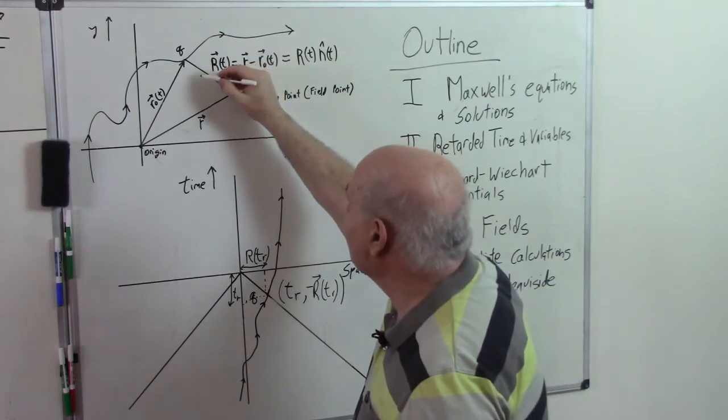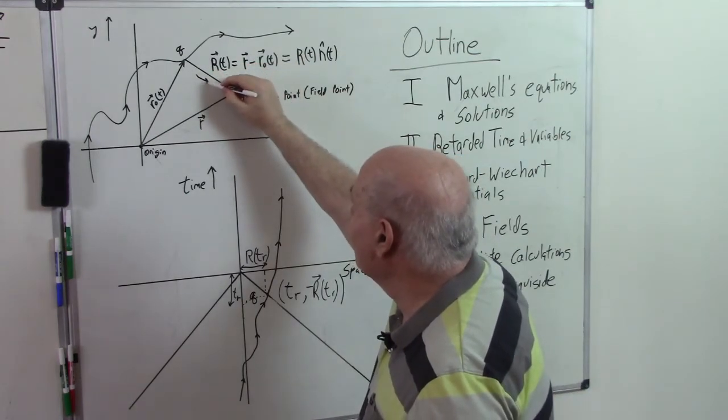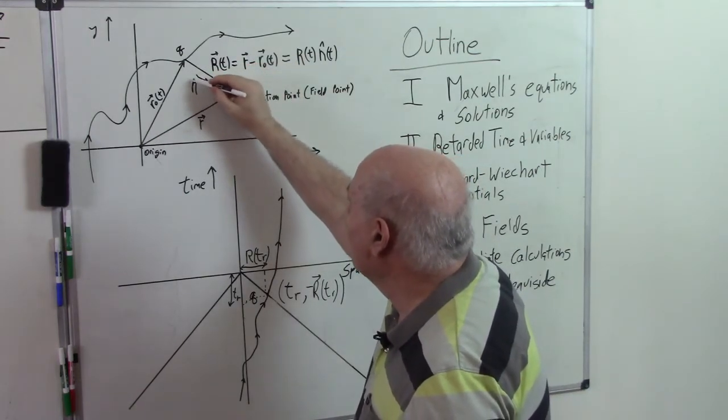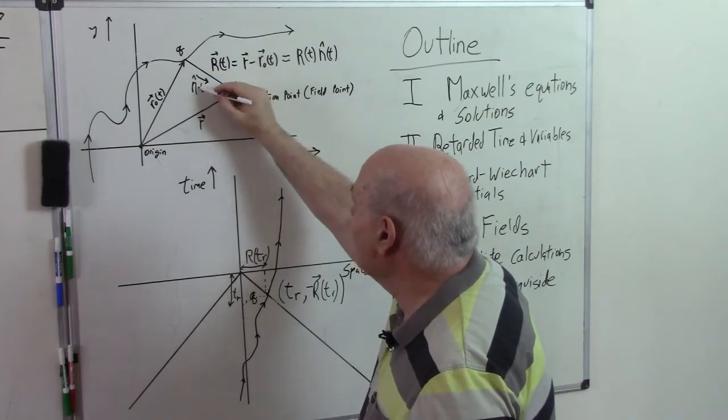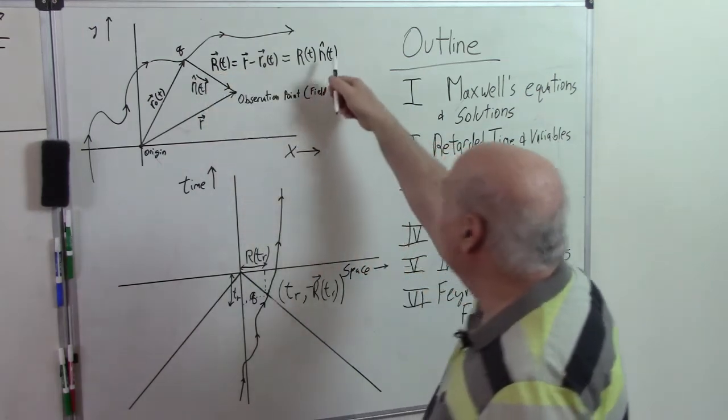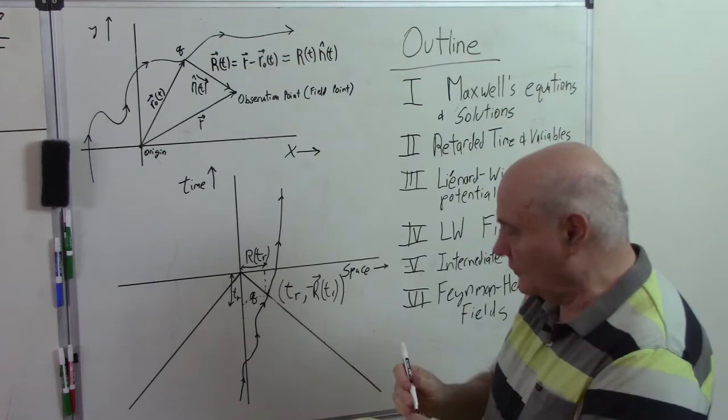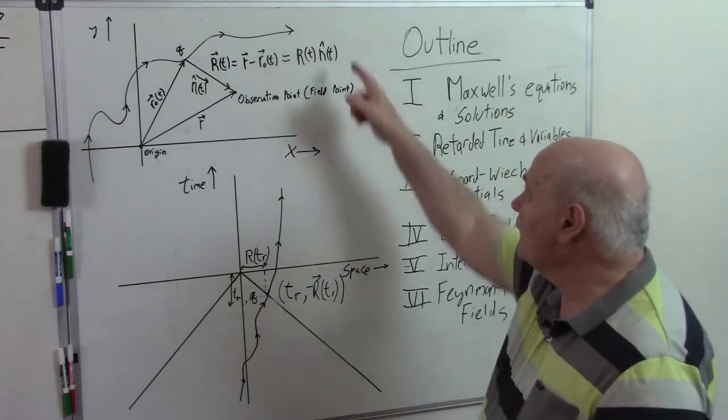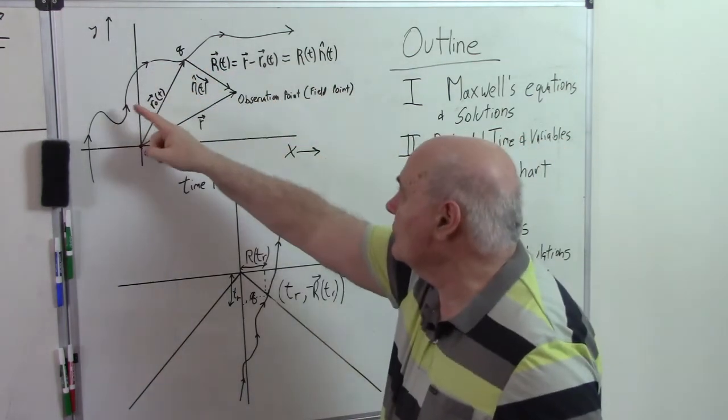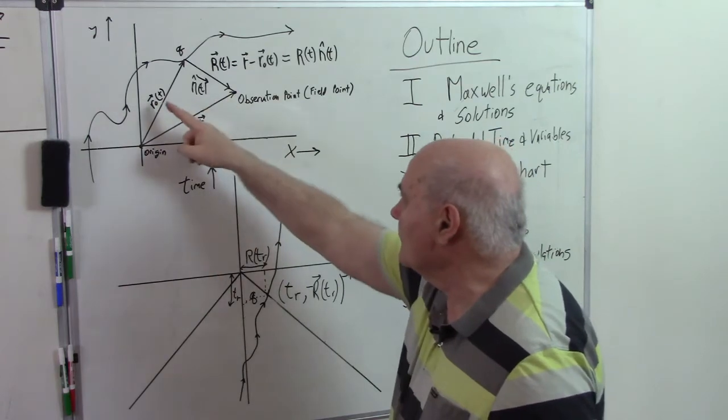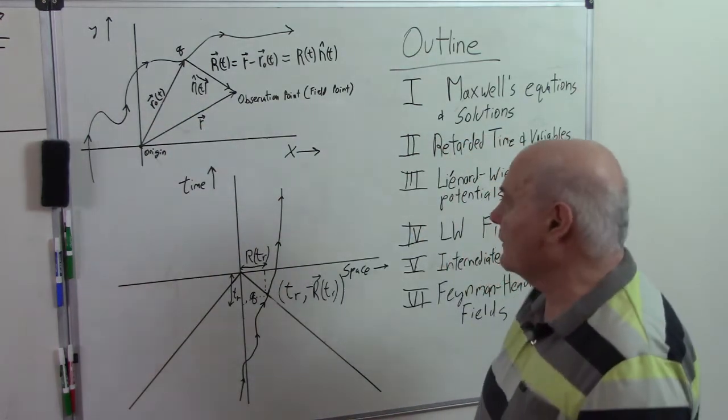So the normal vector is here, say N carat. I'll put a carat above a vector to indicate it's a unit normal vector. And this is a function of time because as the charge moves then the vector is there and the normal points in a different direction.